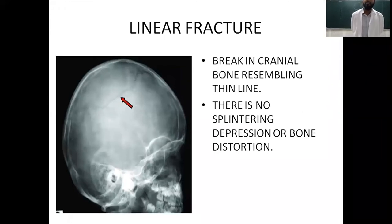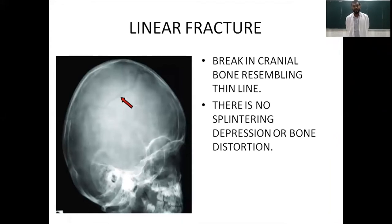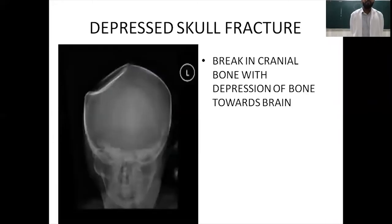A linear skull fracture shows a break in the cranial bone resembling a thin line with no splintering, depression, or distortion of the bone. A depressed skull fracture is a break in the bone with depression of the bone towards the brain tissue, which may itself cause damage to the brain tissue.